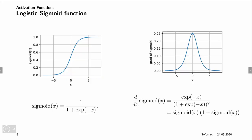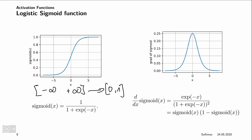There are other non-linear functions. The first one we've already seen is the logistic sigmoid from logistic regression. The logistic sigmoid takes a number between minus infinity and plus infinity and maps it to the range (0, 1). It is defined as 1 / (1 + e^{-x}). The derivative of the sigmoid is e^{-x} divided by (1 + e^{-x})^2.